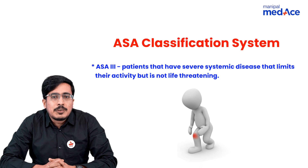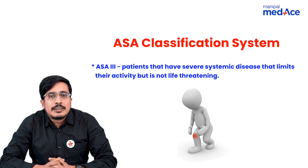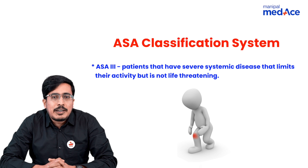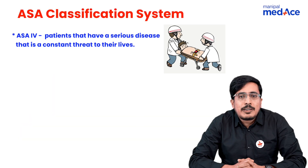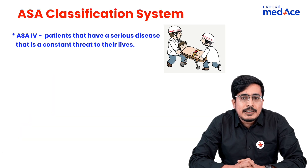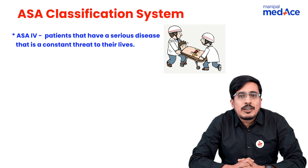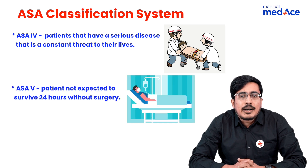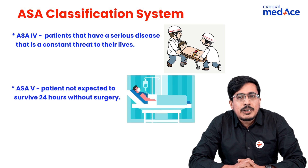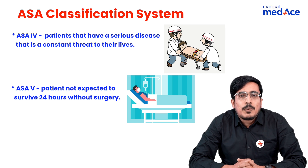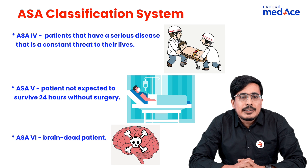Class 3 includes patients that have severe systemic disease that limits the person's activity but it's not life-threatening. Class 4 includes patients who have a serious disease that is a constant threat to their lives. Category 5 includes the patient who is not expected to survive more than 24 hours without the surgery, and ASA class 6 includes a brain-dead patient.